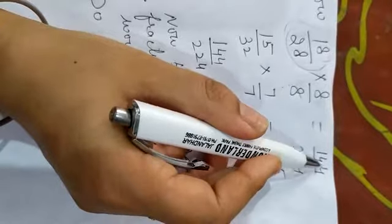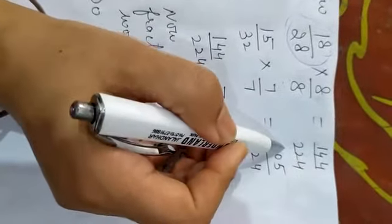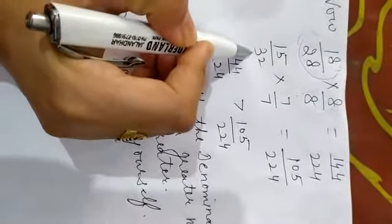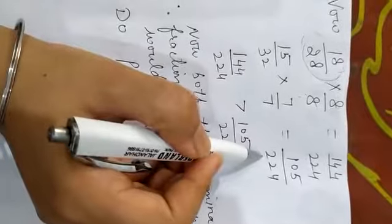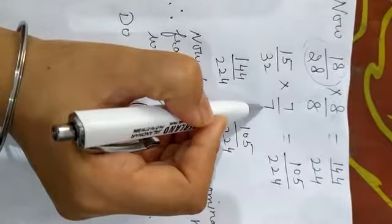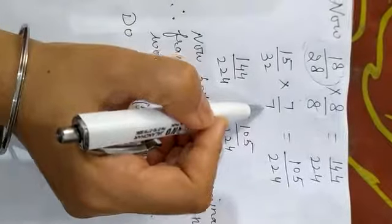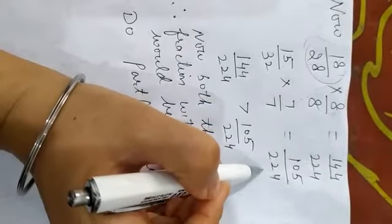The first term result will be 144 upon 224. In the second term, 15 upon 32. Now again we have to make it 224. For this we multiply by 7 in the numerator and 7 in the denominator. Answer will be 105 upon 224.